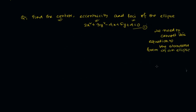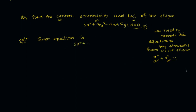The standard form of the ellipse is x²/a² + y²/b² = 1. Using this standard formula, we will find the center, eccentricity, and foci of the ellipse. Let's look at the solution. The given equation is 2x² + 3y² − 4x + 5y + 4 = 0.